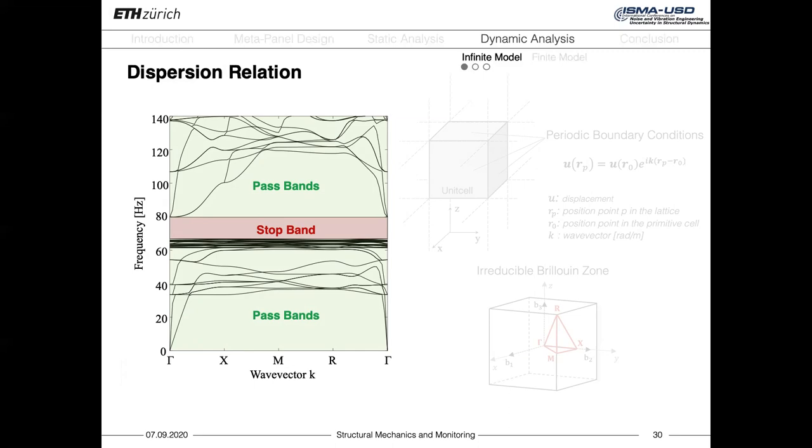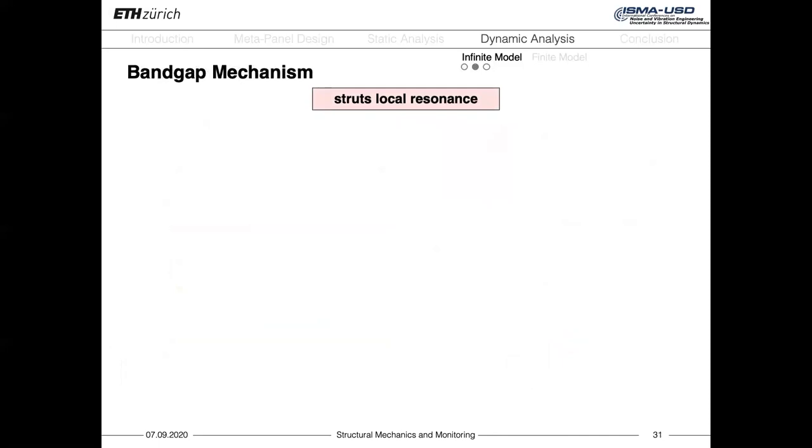However, in order to be able to do it, we first need to understand the generating mechanism of the band gap. We can prove that the band gap here is generated by the localized resonance of the struts in the soft octet cell, and not by the destructive interference that happens when there is a periodic cell.